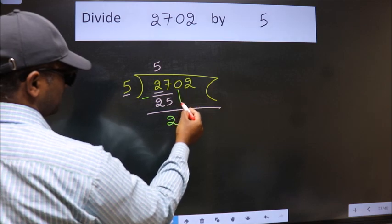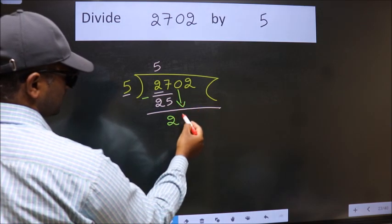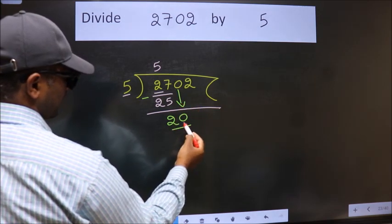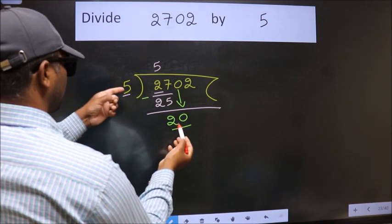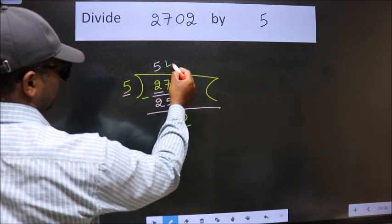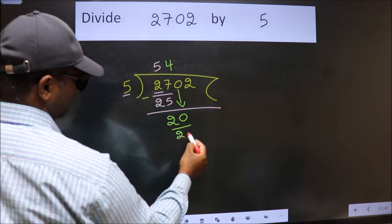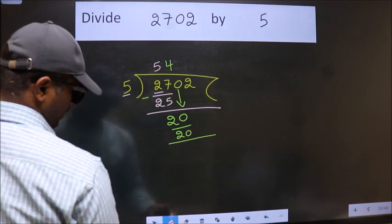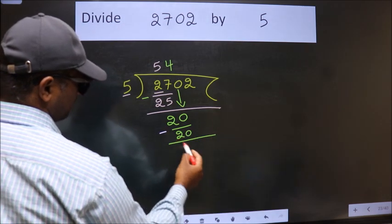After this, bring down the beside number. So 0 down, so 20. When do we get 20 in 5 table? 5 fours, 20. Now we subtract. We get 0.